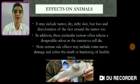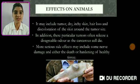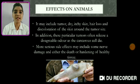So here are some effects on animals. First, it may include tumor, dry itchy skin, hair loss, and discoloration of the skin around the tumor site. Second, in addition, these particular tumors often release a disagreeable odor as the cancerous cells die. Third, more serious side effects may include nerve damage and either the death or hardening of healthy tissue.